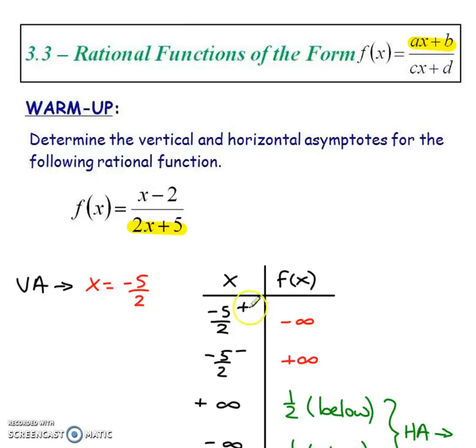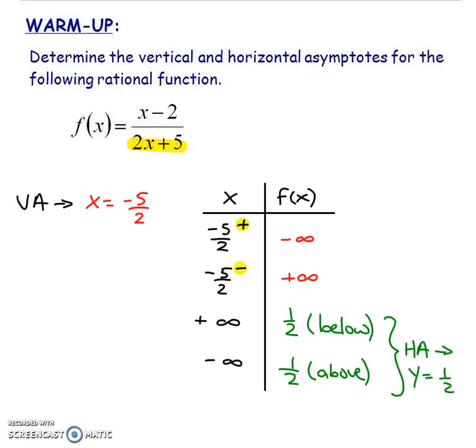So that means that our vertical asymptote is x equals negative 5 over 2. And do you remember how we put it into the table? We got to figure out our end behavior by testing a little bit to the right and left. That's basically the same thing for this type of function.